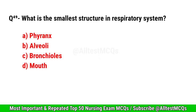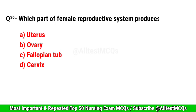Question No. 49. What is the smallest structure in the respiratory system? Correct option is B.